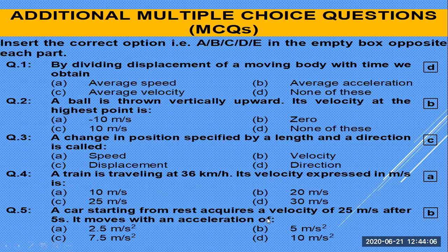A car starts from rest — initial velocity Vi is 0 — and acquires a velocity of 20 m/s after 5 seconds. Acceleration equals Vf minus Vi divided by t, that is 20 minus 0 divided by 5.